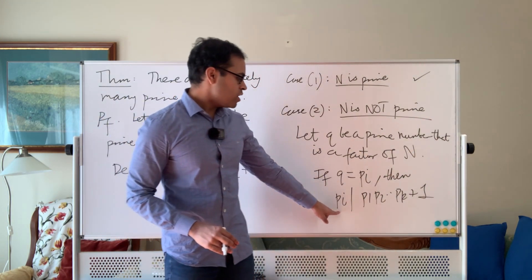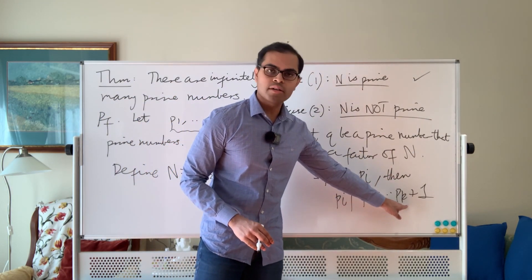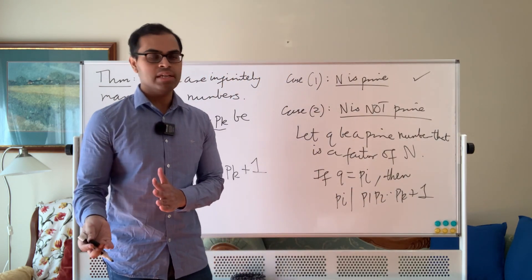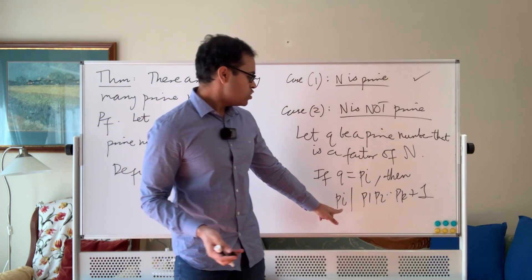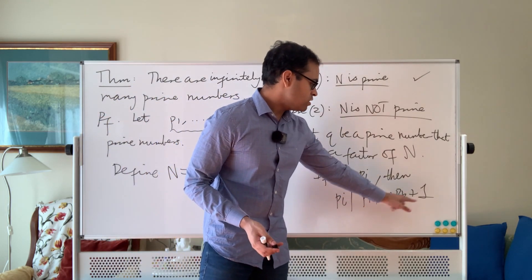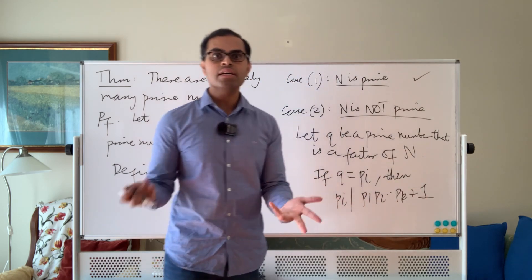But of course we know that Pi goes into P1 dot dot Pk because Pi is one of the P1 dot dot Pk's. So when you divide Pi into this thing plus 1, your remainder will be 1.